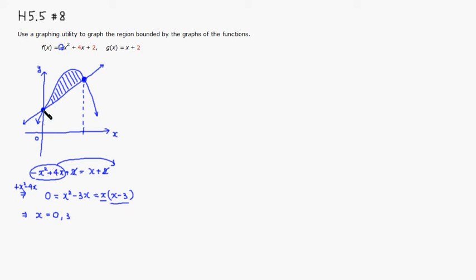So we know that here is at 0 and this one is 3. We can find the area from here. So we set up the definite integral. A is equal to integral from 0 to 3. The top curve is negative x squared plus 4x plus 2, then we subtract x plus 2. And of course you have to put dx here.